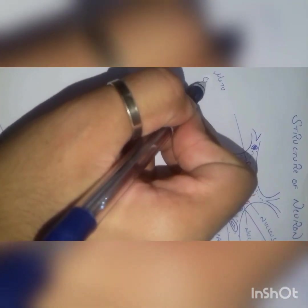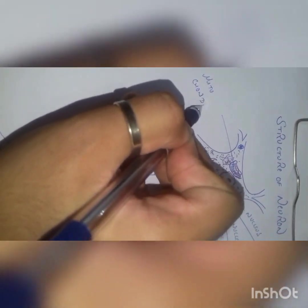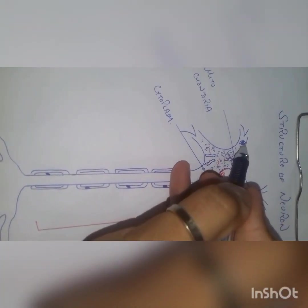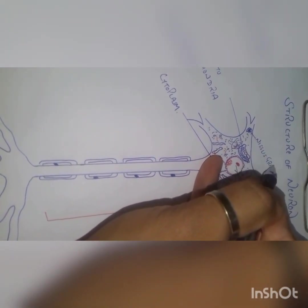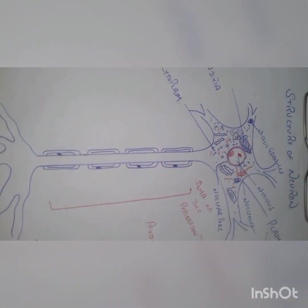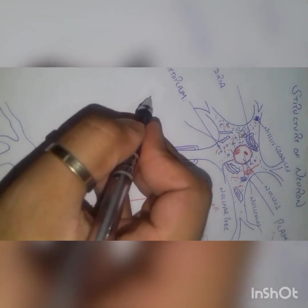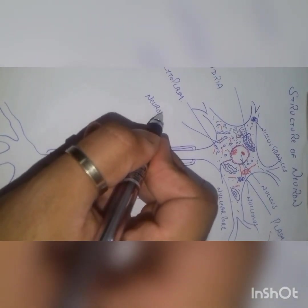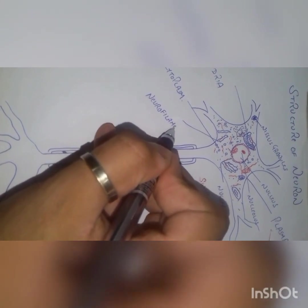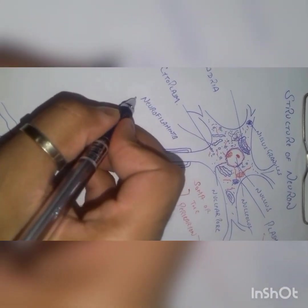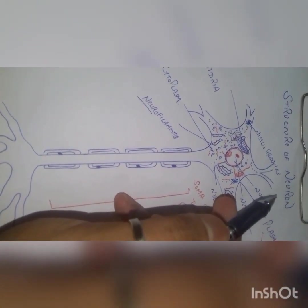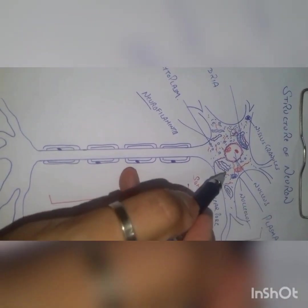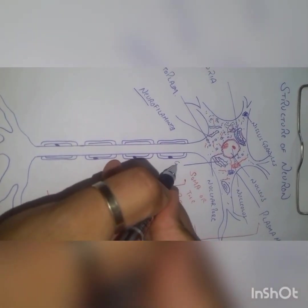The cytoplasm of the neuron consists of various organelles. This is the mitochondria. These are small aggregations of rough endoplasmic reticulum known as Nissl's granules. These are long structures known as neurofilaments, which are generally named microfilaments, but since we are studying the neuron specifically, they are called neurofilaments.